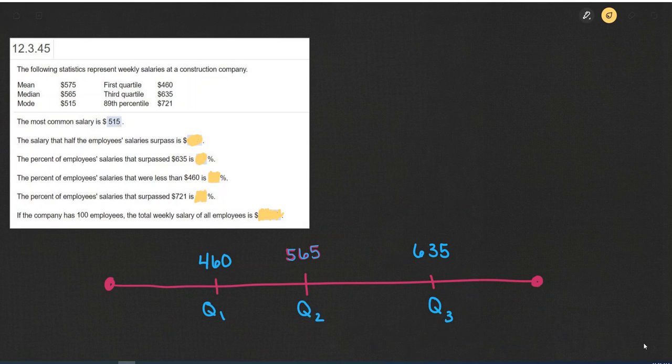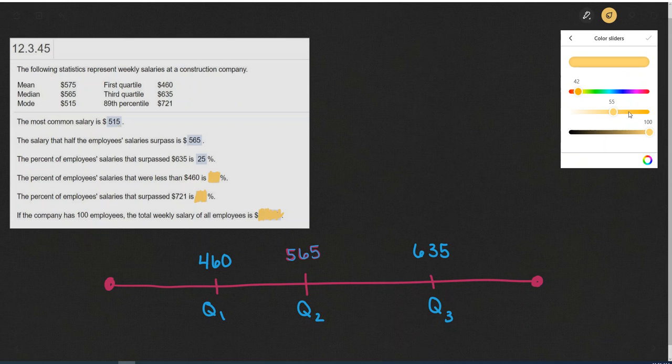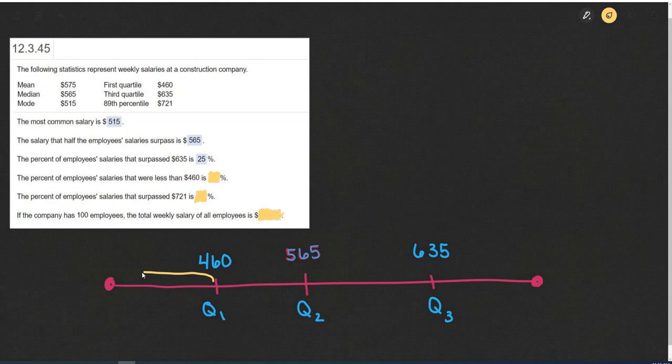And then the percent of the employee salaries that were less than $460. Now that less than $460 is this amount right here. And since quartile one is at $460, this is going to represent 25% again.